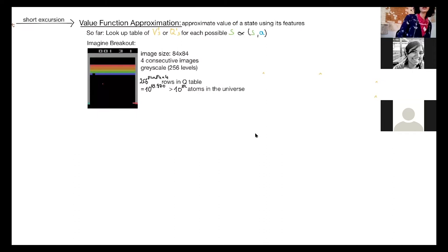imagine you have a game like Breakout with an image size of 84 times 84. We use four consecutive images to decide on an action and we have grayscale pixels with 256 levels. That means we would have 256 to the power of 84 times 84 times 4 rows in the Q table, which would be 10 to the power of 69,970, which is a lot more than the number of atoms in the universe. So this is impossible to store on any kind of machine.